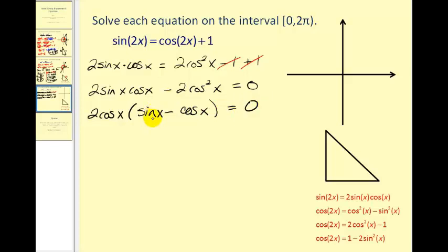Now normally this is going to be a problem having two different trig functions. But let's go ahead and see what we can do with it. So we'll set each of these factors equal to zero.